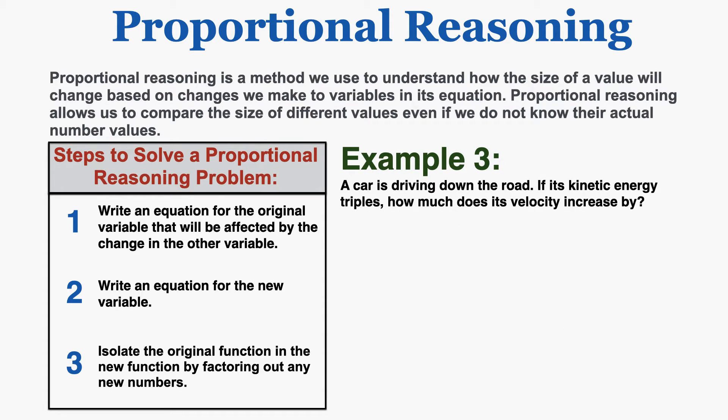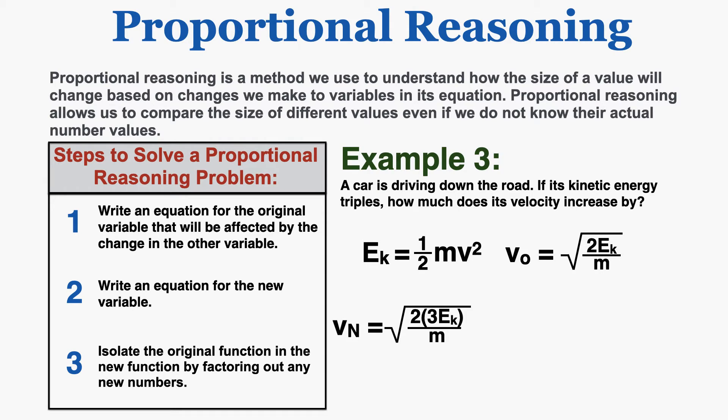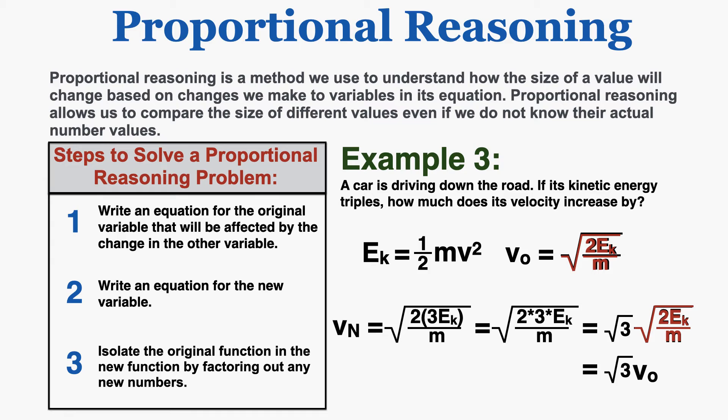Example 3: a car is driving down the road. If its kinetic energy triples, how much does its velocity increase by? The equation for kinetic energy is one half times mass times velocity squared. Rearranging for velocity, the original velocity equals the square root of 2 times kinetic energy over mass. The new velocity is based on the same mass, but kinetic energy has tripled, so I factor out the 3, getting the square root of 3 times the square root of 2 times kinetic energy over mass. The new velocity equals the square root of 3 times the old velocity.